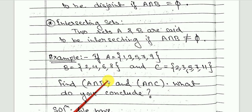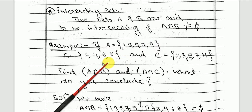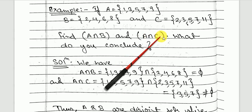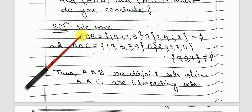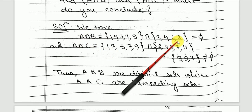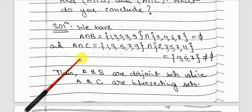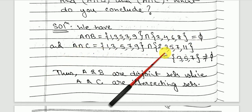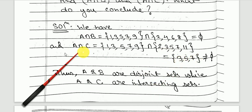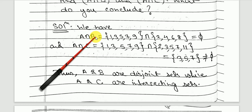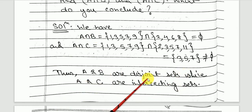For example, given sets A, B, and C: A intersection B is empty because there is nothing common in them, so A and B are disjoint sets. A intersection C gives {3, 5, 7}, so A and C are intersecting sets.